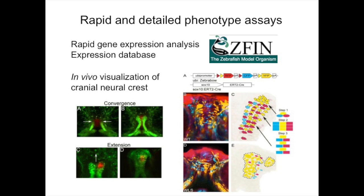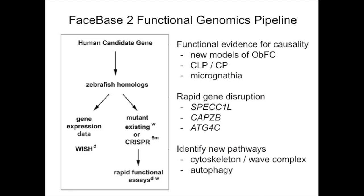If you have a gene from a human study, we will be very interested. We can immediately do expression analysis and are set up for very detailed phenotypic analysis. For example, we can look at convergent extension of the palate, maxillary prominences in green, the frontal nasal process in red, and directional proliferation of the palate. We also have a Zebrabow multi-spectral analysis working well for clonal analysis and live imaging. Examples include work done with SPEC1L, CAPZB, and ATG4C.